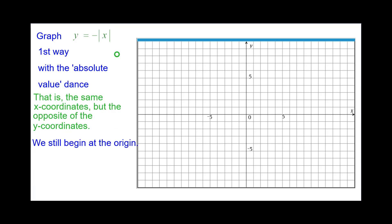So begin at the origin. Since the opposite of the absolute value of 0 is 0, (0, 0) is there. Instead of going to the right 1 and up 1 like we do on the absolute value, we will go right 1 and down 1 because the opposite of the absolute value of 1 is negative 1.